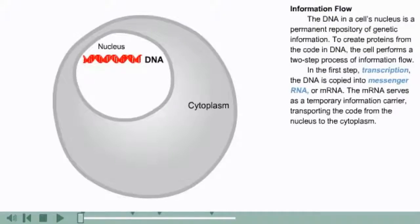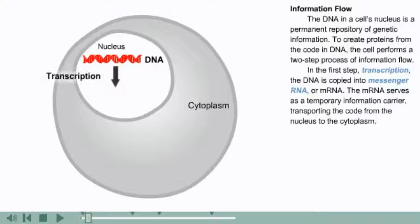The DNA in a cell's nucleus is a permanent repository of genetic information. To create proteins from the code in DNA, the cell performs a two-step process of information flow. In the first step, transcription, the DNA is copied into messenger RNA or mRNA. The mRNA serves as a temporary information carrier, transporting the code from the nucleus to the cytoplasm.